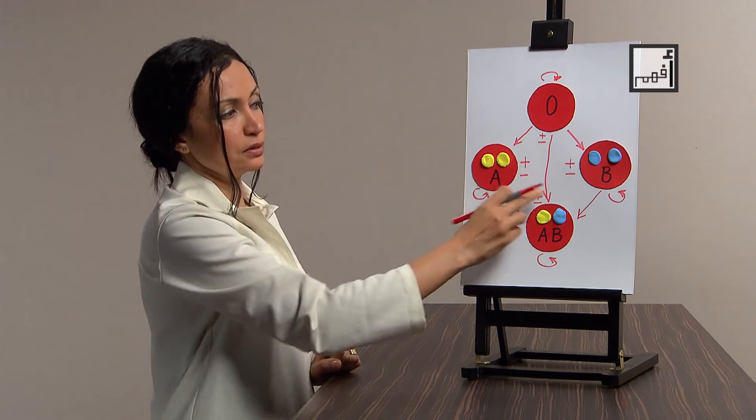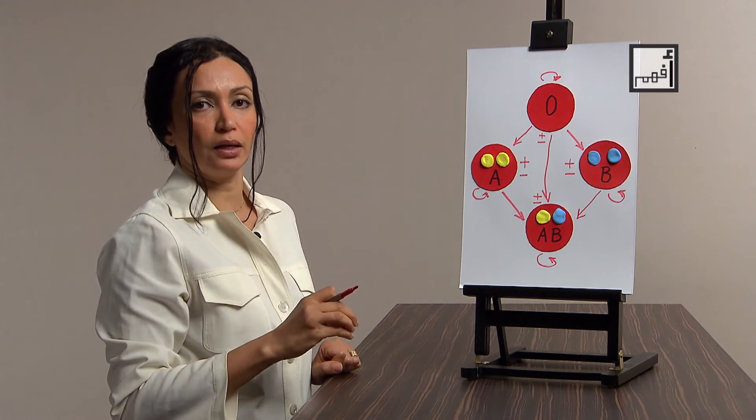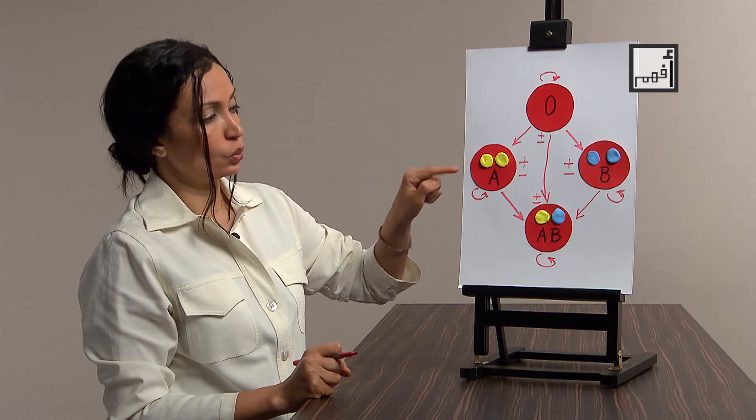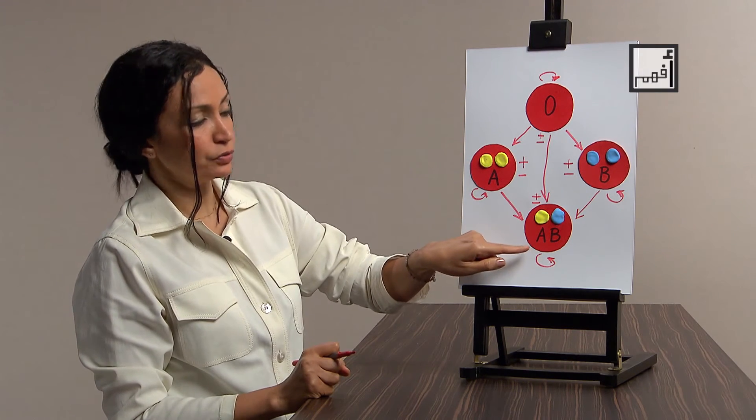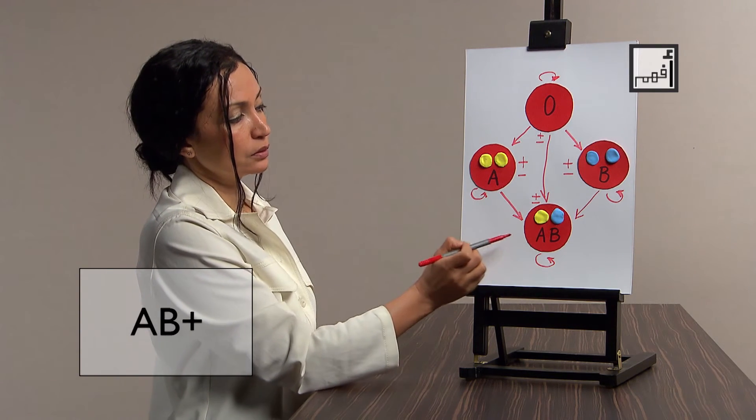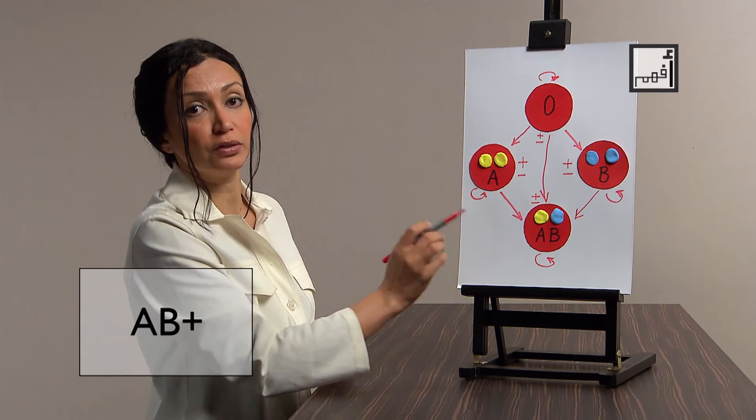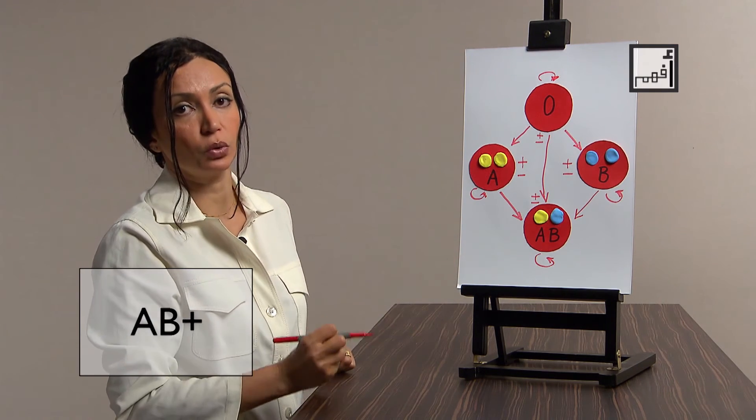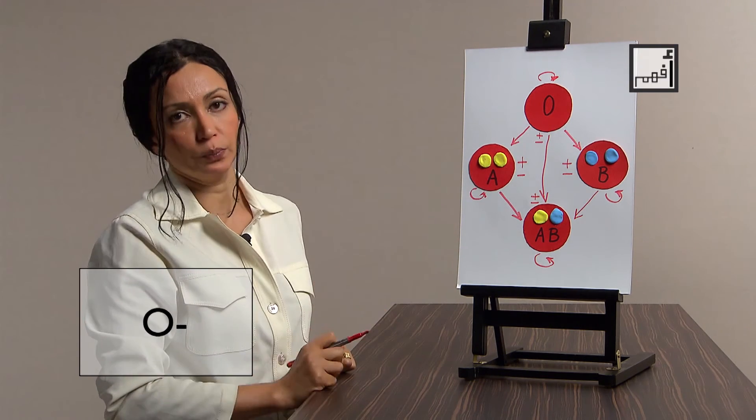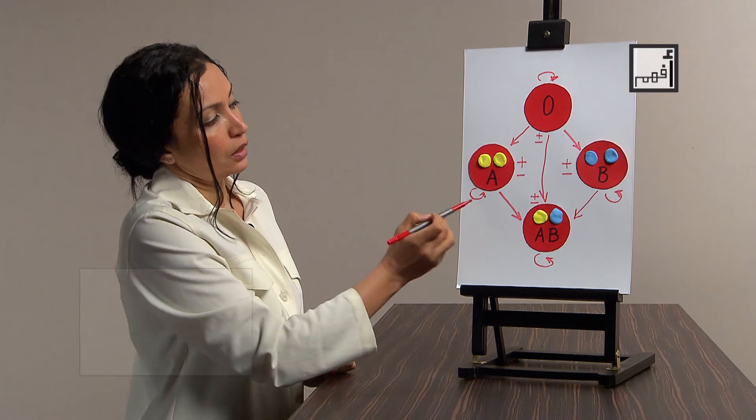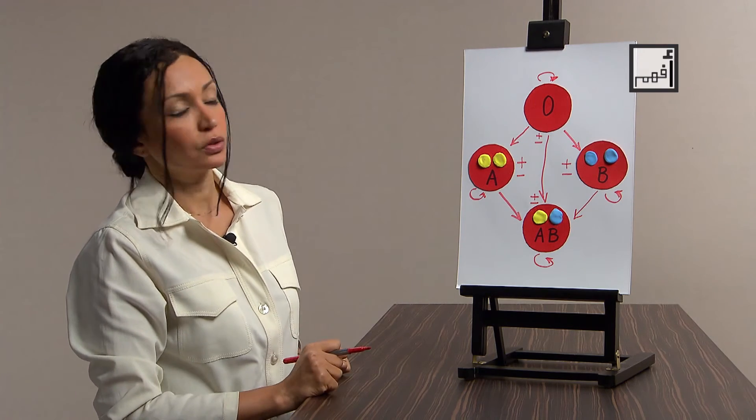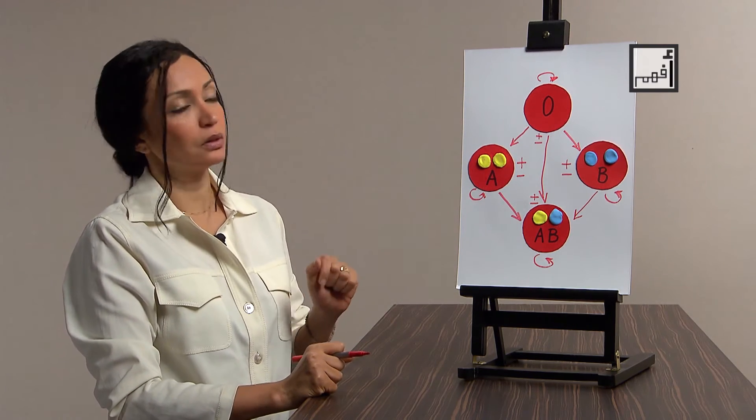During blood transfusion, rhesus positive can receive blood from rhesus negative, which has no proteins on the surface, and from rhesus positive as well, of course, because the body will recognize it as a friend and won't do anything against it. So in fact, AB positive is the general or universal recipient, which can receive blood from all blood groups. And O negative is the general donor that can donate blood to all the other groups. In addition to the importance of blood groups during operations and blood transfusion, they are also important to know around the time of pregnancy and childbirth.